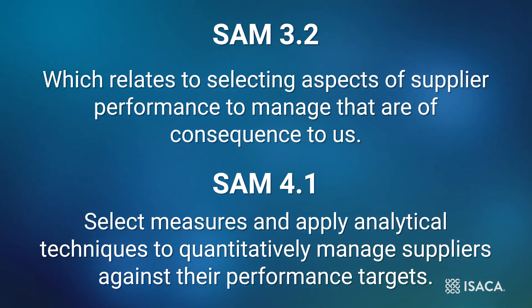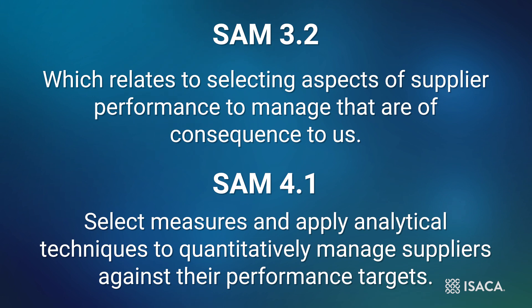To begin this process, we need to identify what success means for us. At level 3, we examine SAM 3.2, which relates to selecting aspects of supplier performance to manage that are of consequence to us — for example, those that may pose significant risk to the achievement of our goals. Even at level 3, this often involves determining what aspects of our performance are important to our customers and may be measured. If our customers demand that we deliver on time, all the time, anything that affects our ability to do so becomes critical to our success.